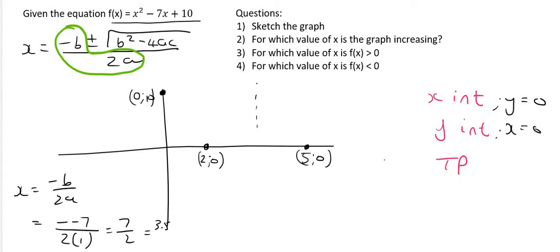So 3.5 is going to be exactly in the middle over here but we don't know exactly where the y value is. We don't know if it's going to be here, here, here, here, here. We don't know where it is.